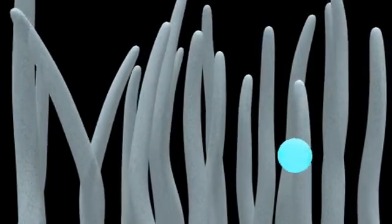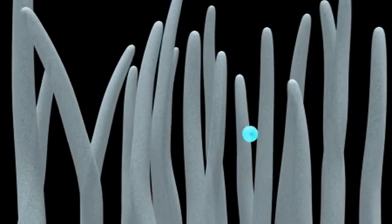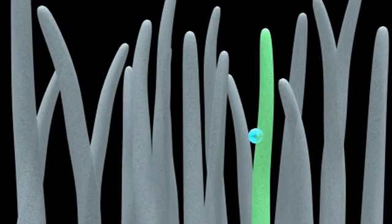This neuron, AB4B, expresses the receptor OR56A and targets the glomerulus DA2.